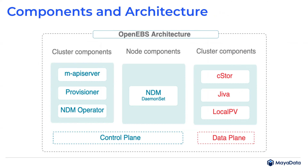Some key components to know: on the cluster side, OpenEBS has the API server, the Provisioner, and the Node Disk Manager operator. NDM is also a DaemonSet — it's the layer that discovers resources available from the host and environment. OpenEBS today has all three flavors of local OpenEBS dynamic local PVs, Jiva, and C-Store. There's also another revolutionary storage engine coming called MayaStore in the next few weeks — stay tuned.